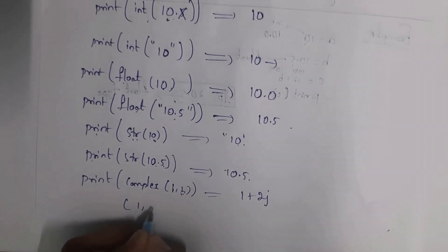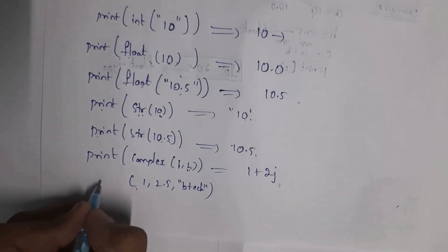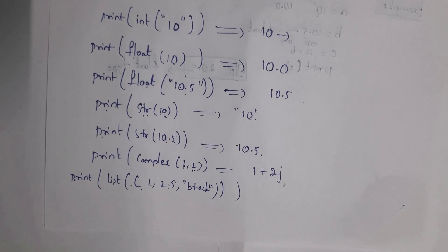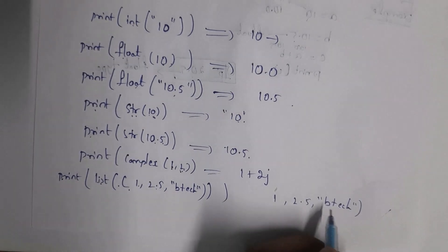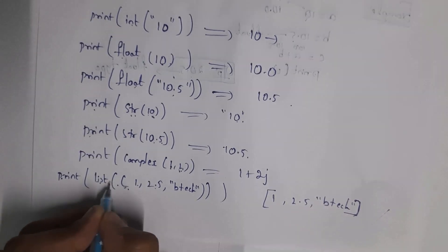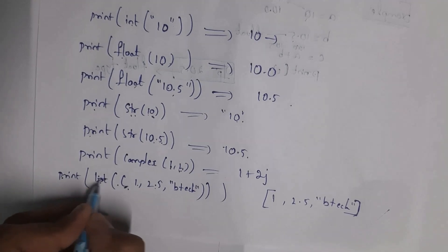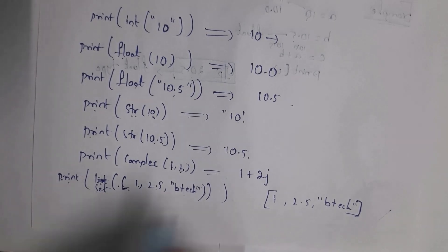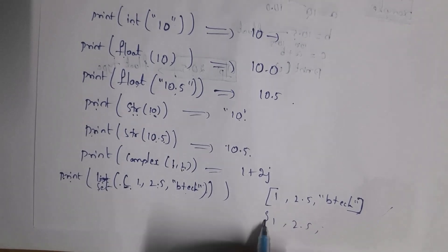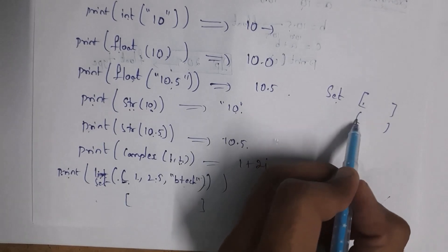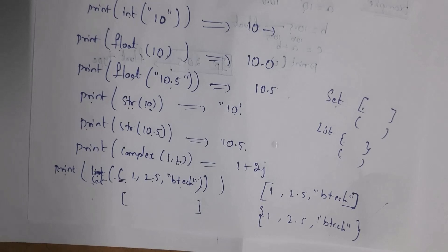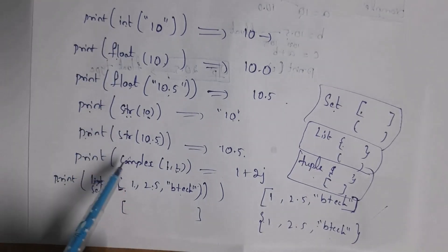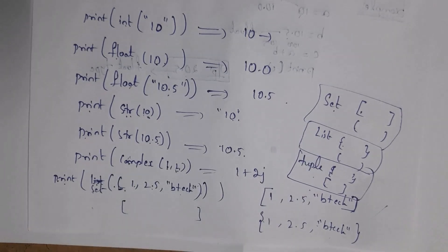To convert a tuple like (1, 2.5, 'btec') to a list, use the list() function: print(list((1, 2.5, 'btec'))) gives output [1, 2.5, 'btec'] in square brackets. To convert a tuple to a set, use set(): print(set((1, 2.5, 'btec'))) gives output in curly braces. Using int(), float(), str(), complex(), set(), list(), and tuple() functions, you can convert between data types.